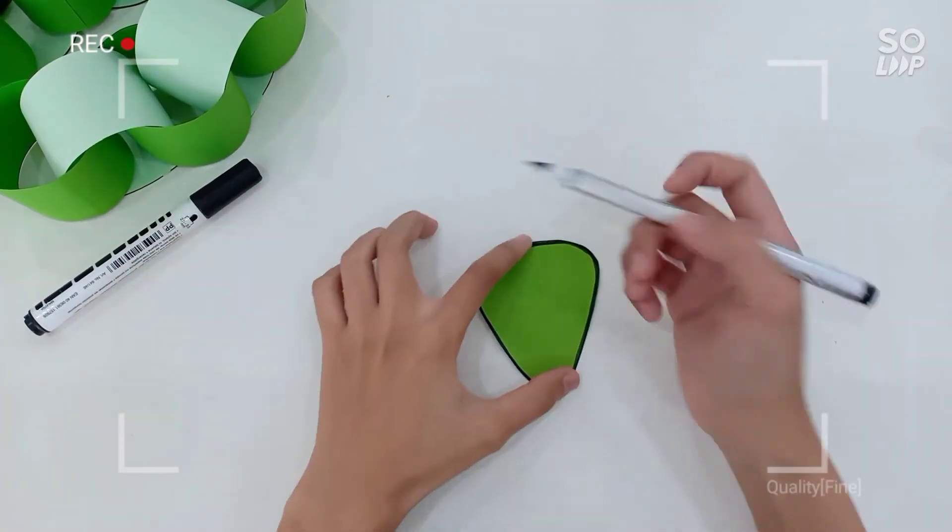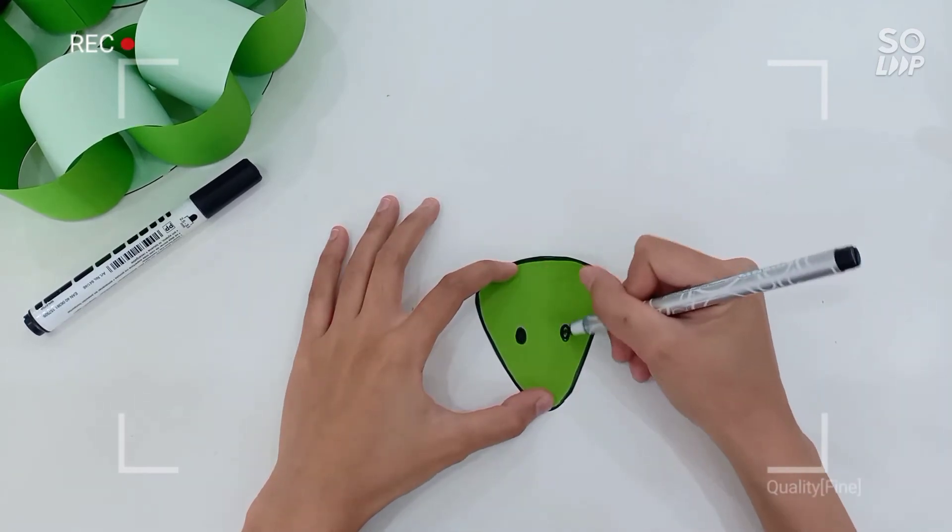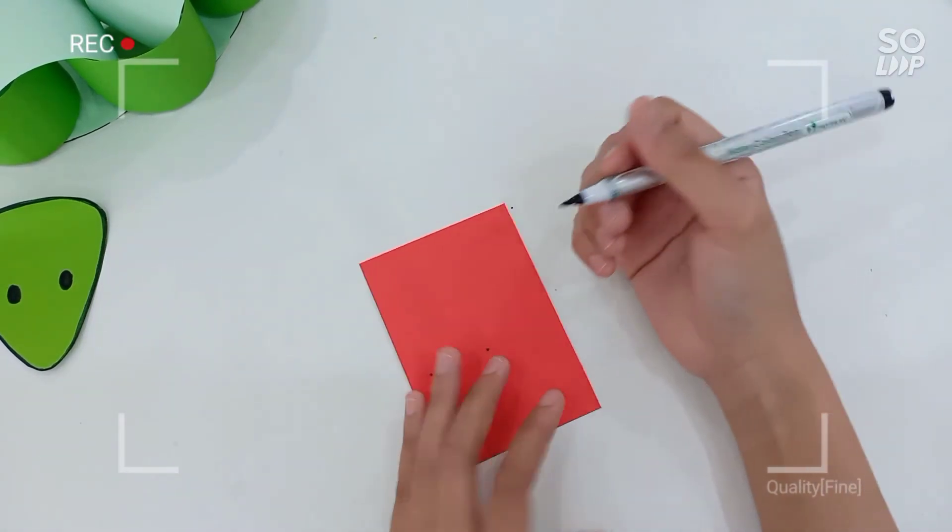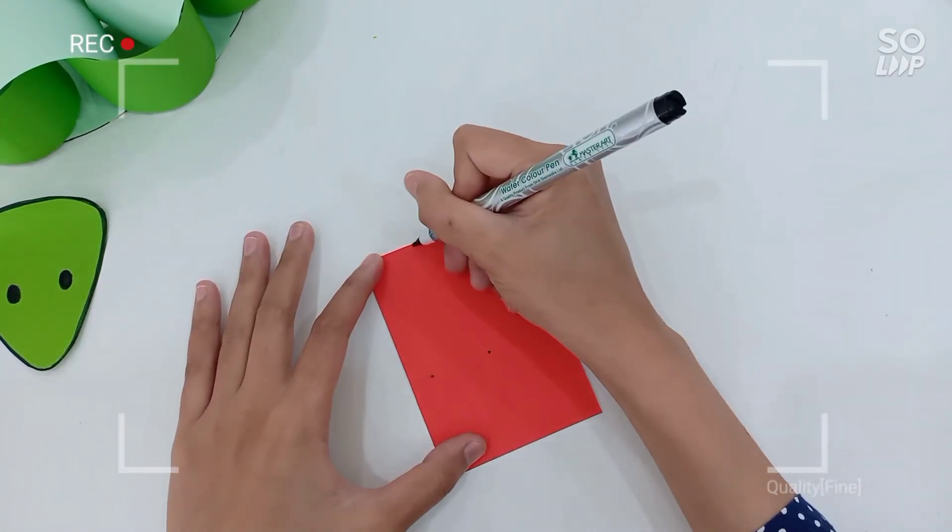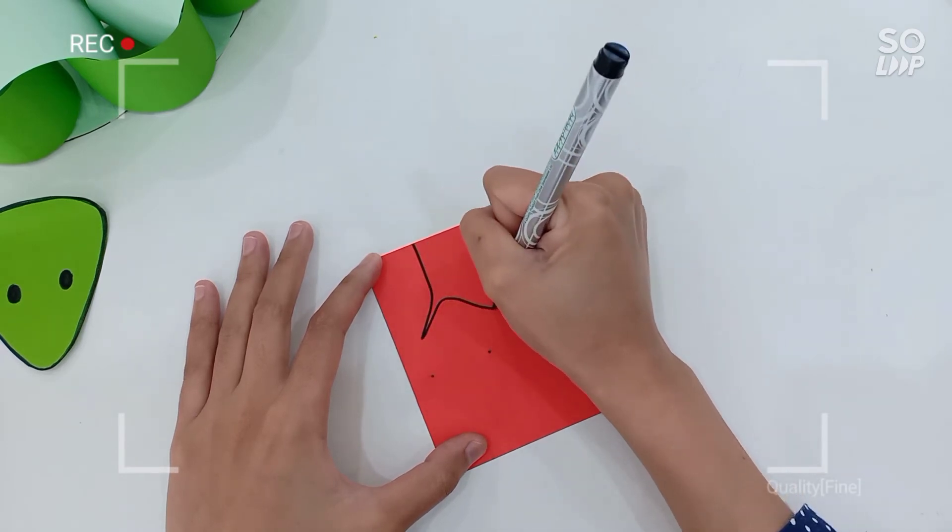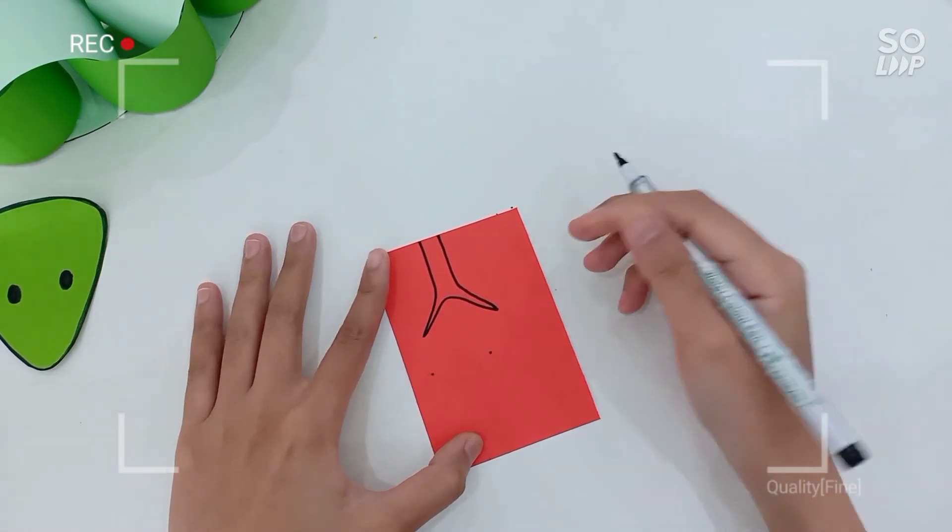Then give the snake some eyes. Next I'm gonna draw the tongue on the red paper. Goes in two different directions just like this. And then cut it out.